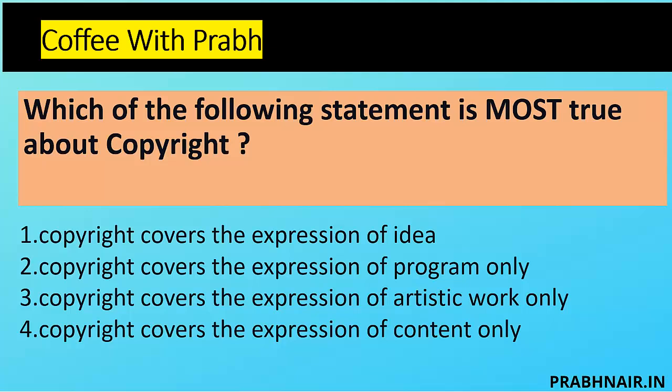Next coffee short: which of the following statements is most true about copyright? Option A: copyright covers the expression of idea — that is true. Option B: copyright covers expression of programs only — also true. Option C: copyright covers expression of artistic work only — also true. Option D: copyright covers expression of content only — also true. But options B, C, and D are all subsets of option A. Copyright covers the expression of idea, which can be in any form — program, artistic work, or content. The answer is A.